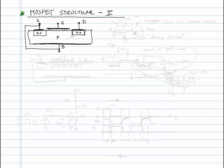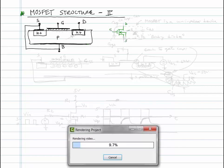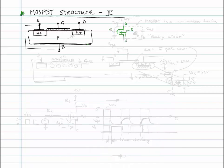So here's a basic planar structure of a MOSFET and here's the symbol: gate, the drain, the source, and then of course we have the body or substrate which we tie to the source.